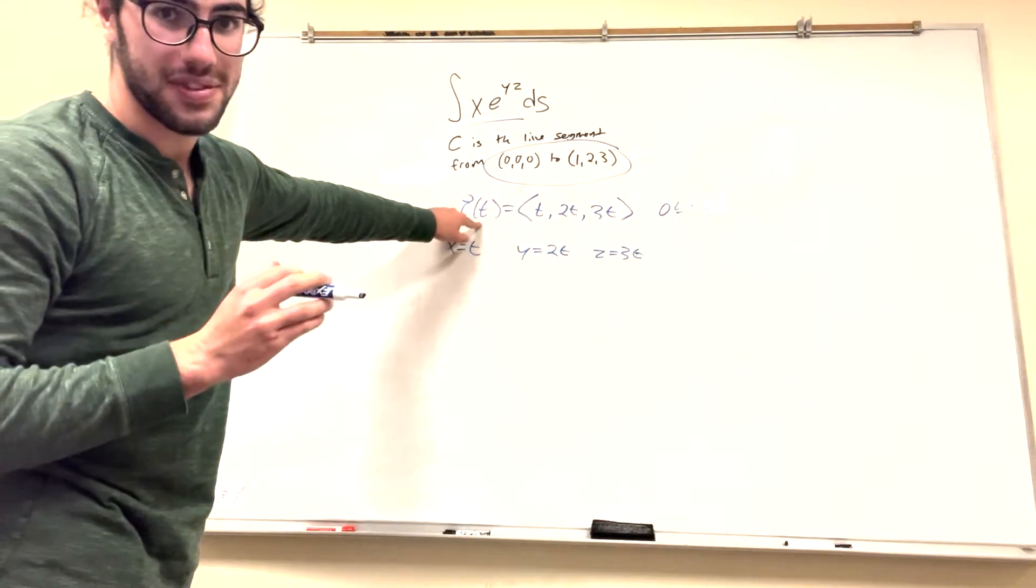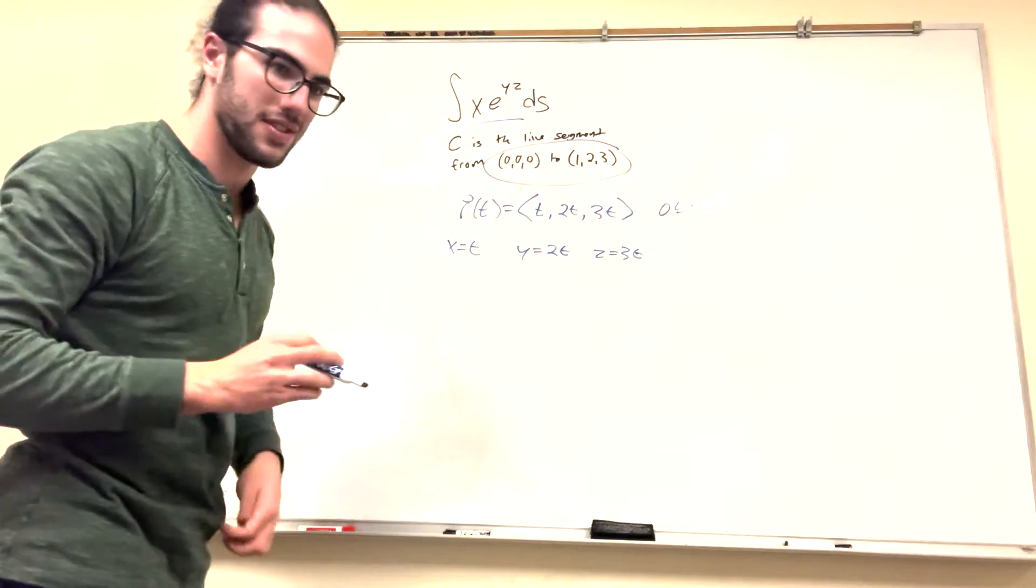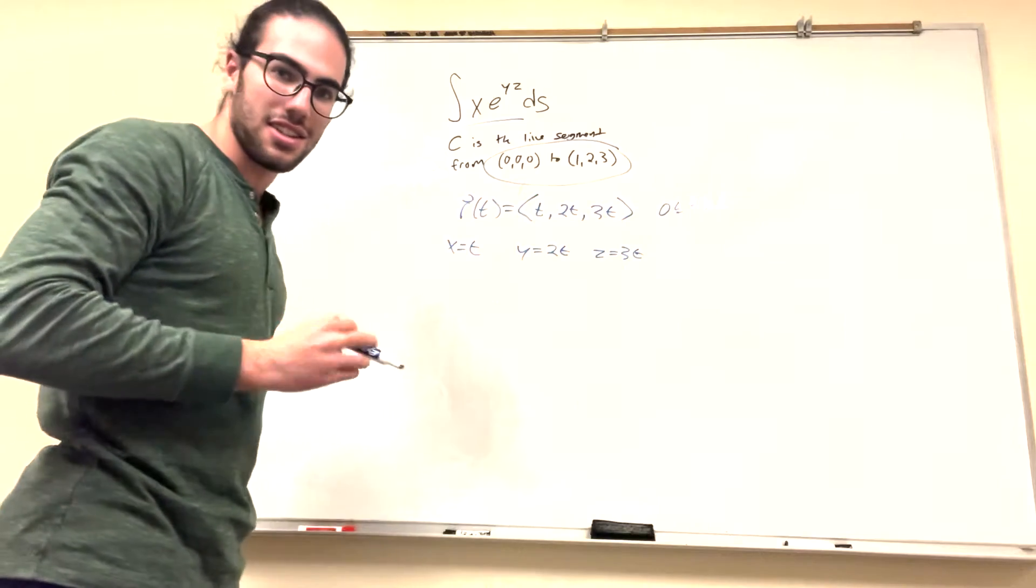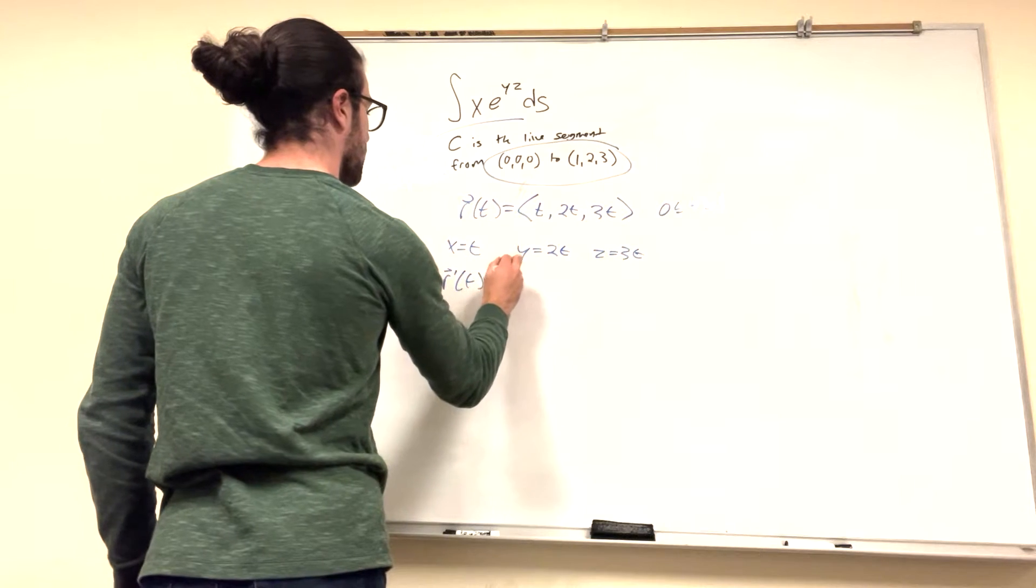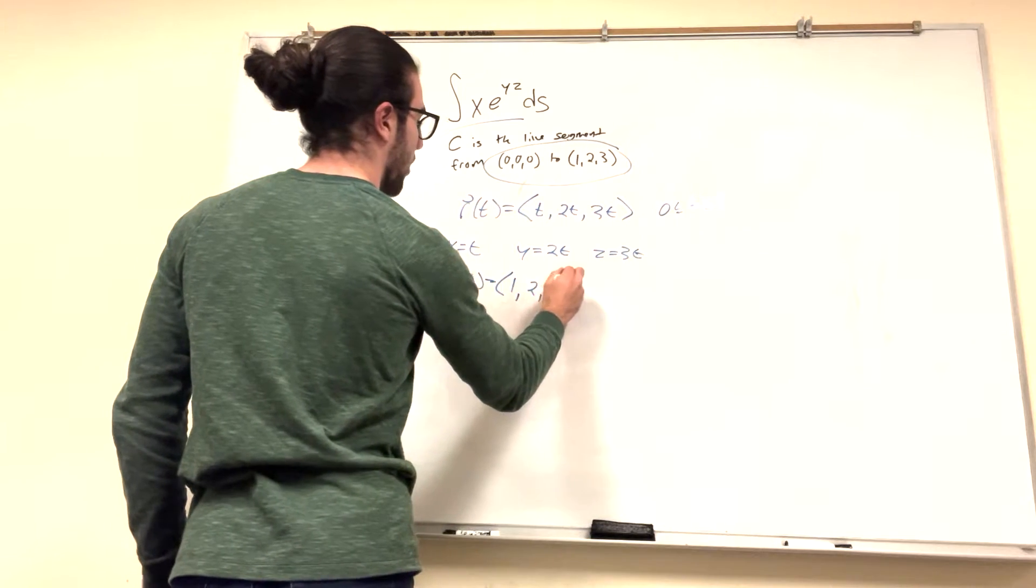So what we have to do is find r prime of t, and then we're going to rechange our variables here, in terms of t, using these things. So it's pretty easy. We can do that. So r prime of t is equal to (1,2,3). Wow. Pretty cool, right?